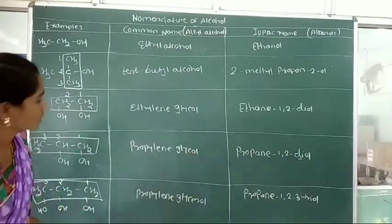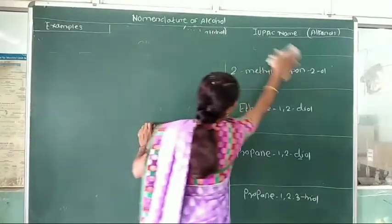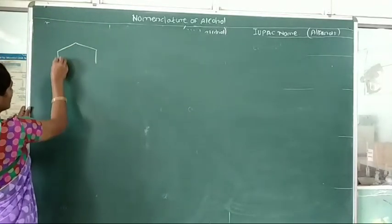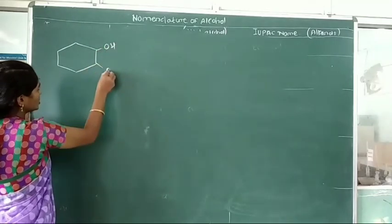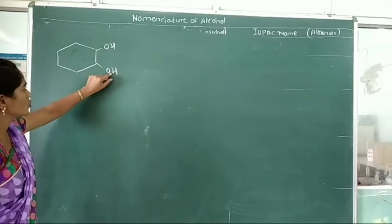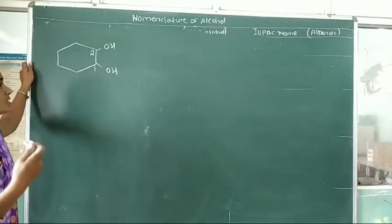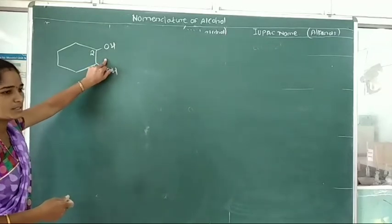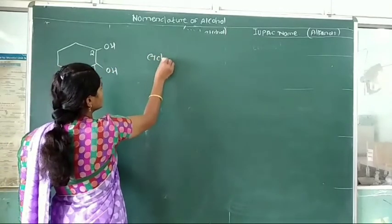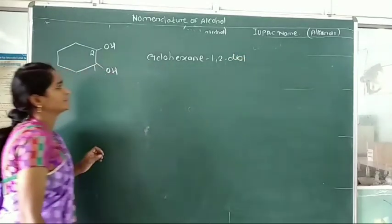Next, we will see cyclic compounds where the hydroxy group is attached to a cyclic ring. For example: a 6-membered cyclic ring — that is cyclohexane — with 2 hydroxy groups attached. Numbering gives positions 1 and 2. In this type of alcohol, we use the prefix 'cyclo'. The IUPAC name of this compound is cyclohexane-1,2-diol.